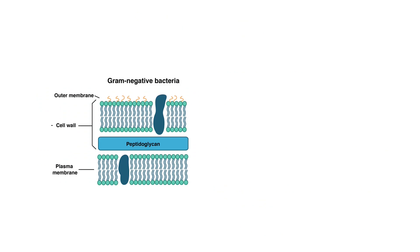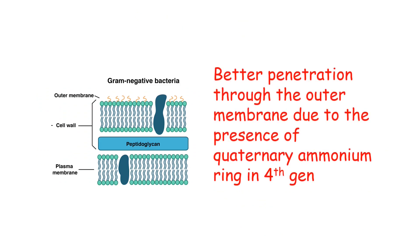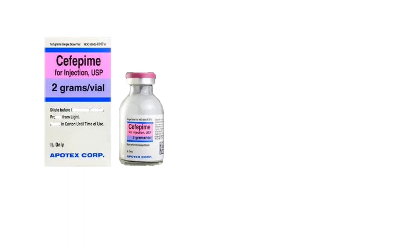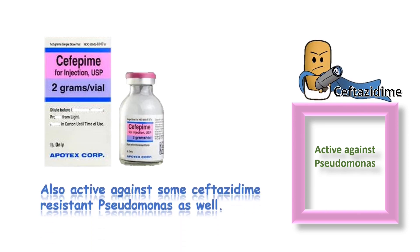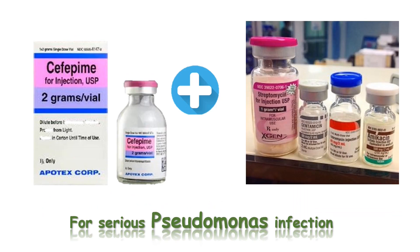The fourth generation cephalosporins have a positively charged quaternary ammonium group attached to the dihydrothiazine ring, which results in better penetration through the outer membrane of gram-negative bacteria. Cefepime, a fourth generation cephalosporin, is as active as Ceftazidime against Pseudomonas aeruginosa and is active against some Ceftazidime-resistant isolates. Cefepime should generally be given in combination with an aminoglycoside for serious Pseudomonas aeruginosa infection when susceptibilities are unknown.